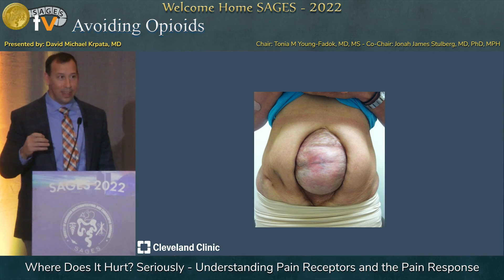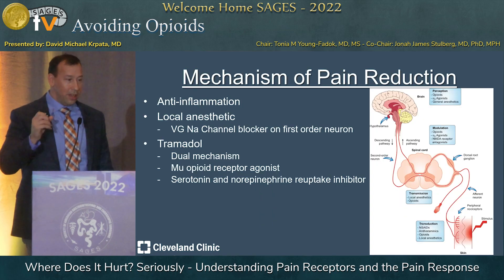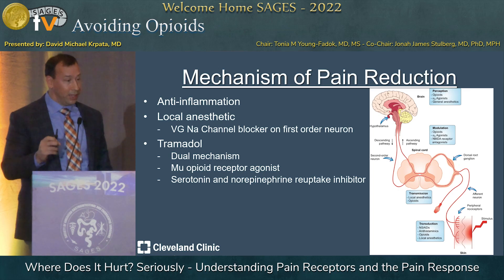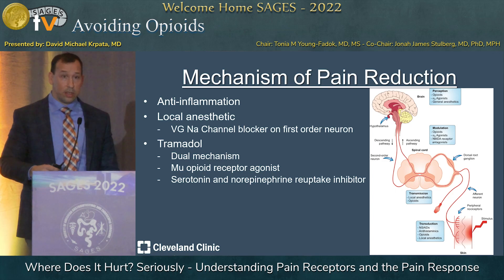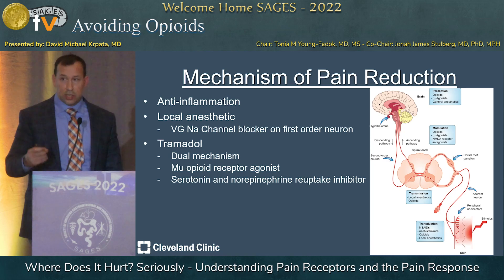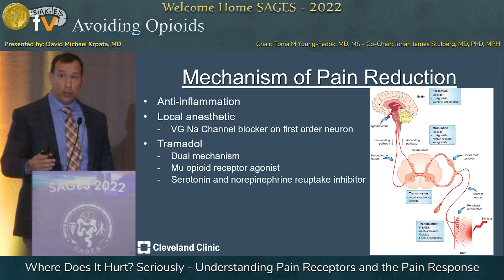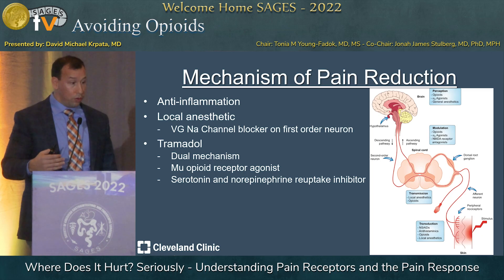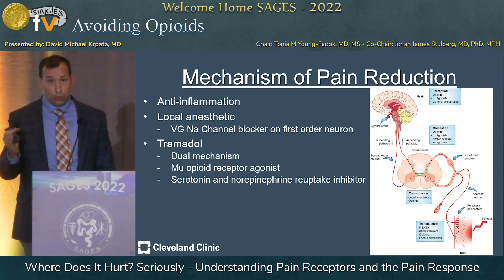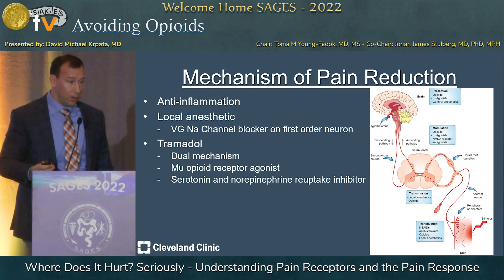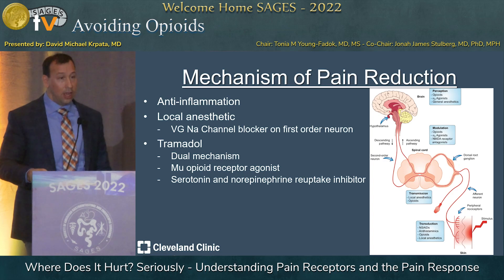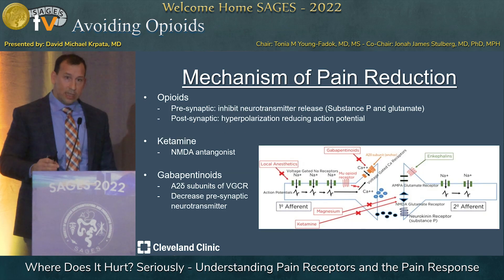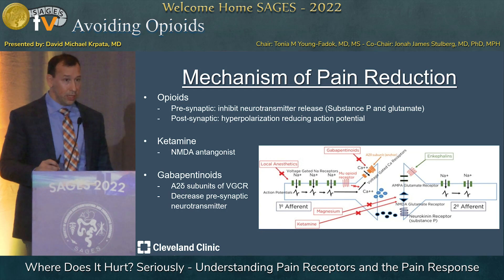As a surgeon going into the operating room, you have to understand pain reduction mechanisms along the pathway. At the level of transduction, anti-inflammatories — whether steroids or NSAIDs — allow you to initially impact the pain pathway. Secondarily, local anesthetics or regional blocks impact the action potential through sodium channel blockers, preventing signal transmission at the first-order level; you can also target the second-order neuron at the spinal level through epidurals. Tramadol has a dual mechanism: it acts on opioid receptors but also has serotonin and norepinephrine reuptake inhibition, acting at the modulation level and centrally. Opioids, as discussed, have their desired analgesic effect within the substantia gelatinosa.